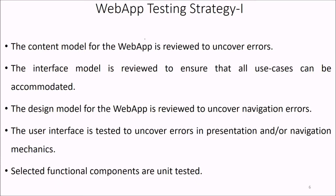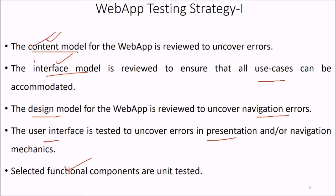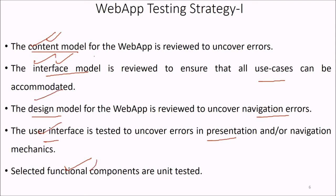There are strategies we are interested in for web application testing. The content model for the web app is reviewed to uncover errors. The interface model is reviewed to ensure that all use cases can be accommodated. The design model for the web app is reviewed to uncover navigation errors. The user interface is tested to uncover errors in presentation or navigation mechanics. Functional components are unit tested. Navigation throughout the architecture is tested. The web app is implemented in a variety of different environmental configurations and tested for compatibility with each. And to exploit vulnerabilities or other threats, we perform security testing.